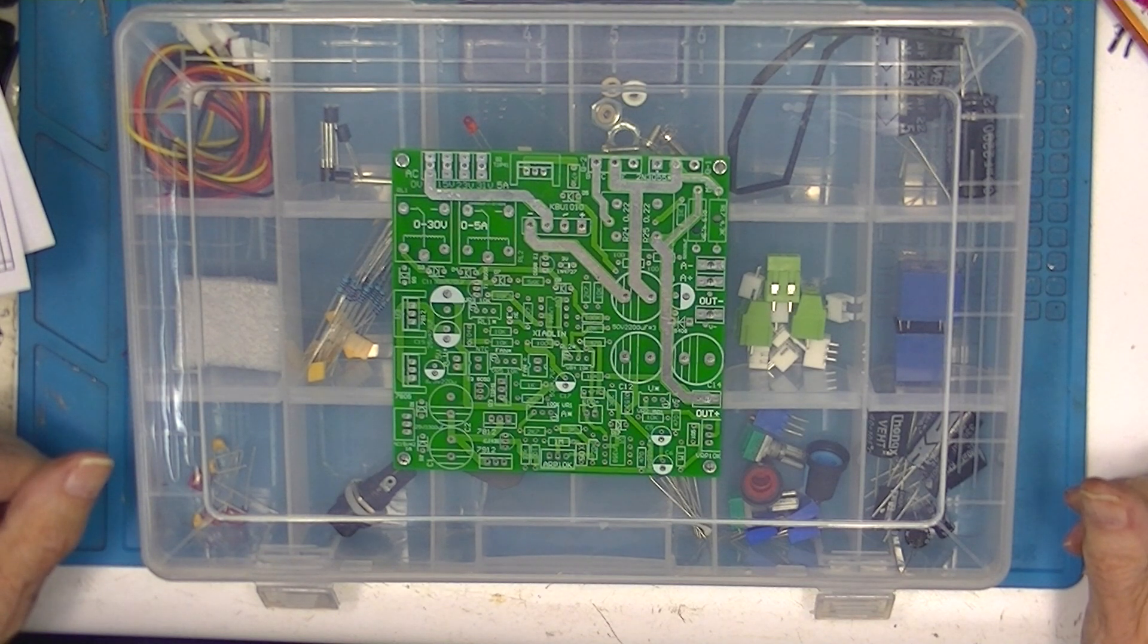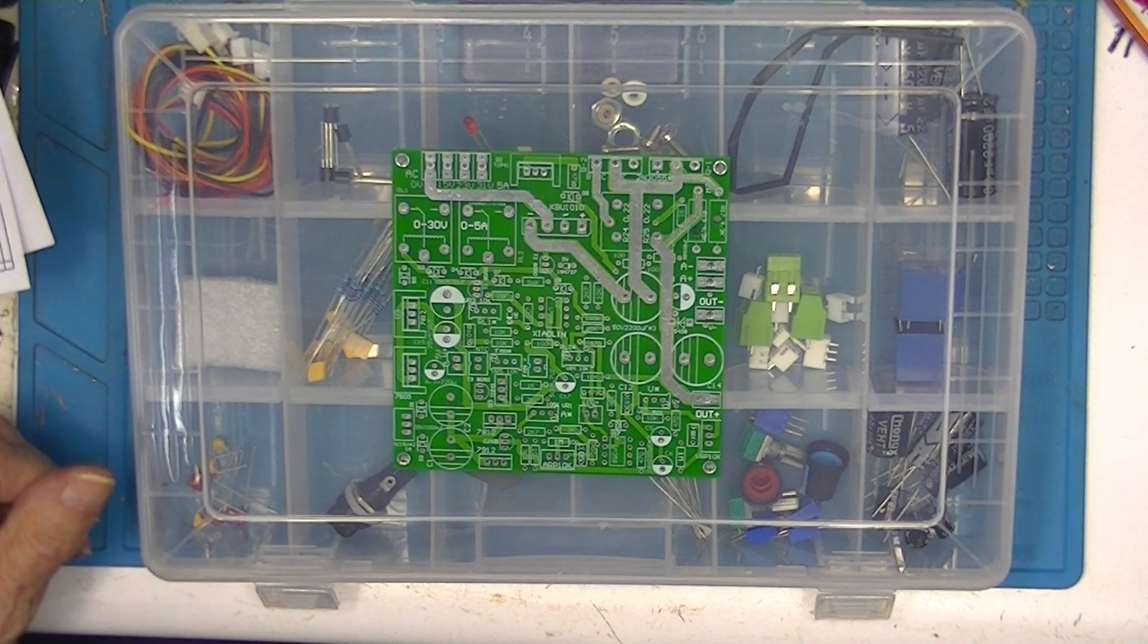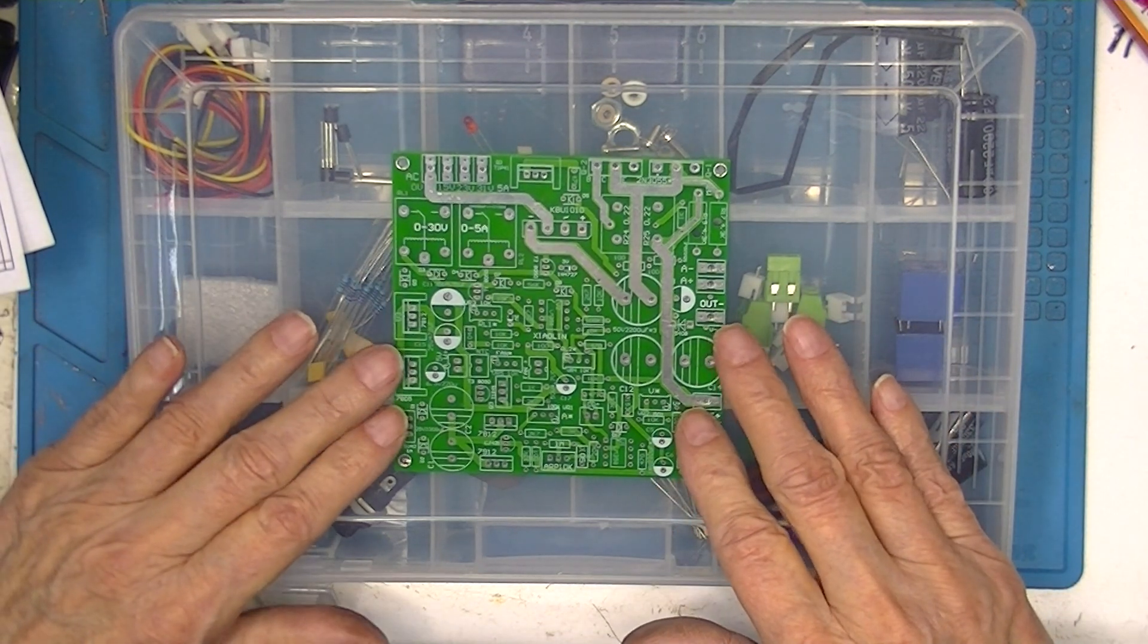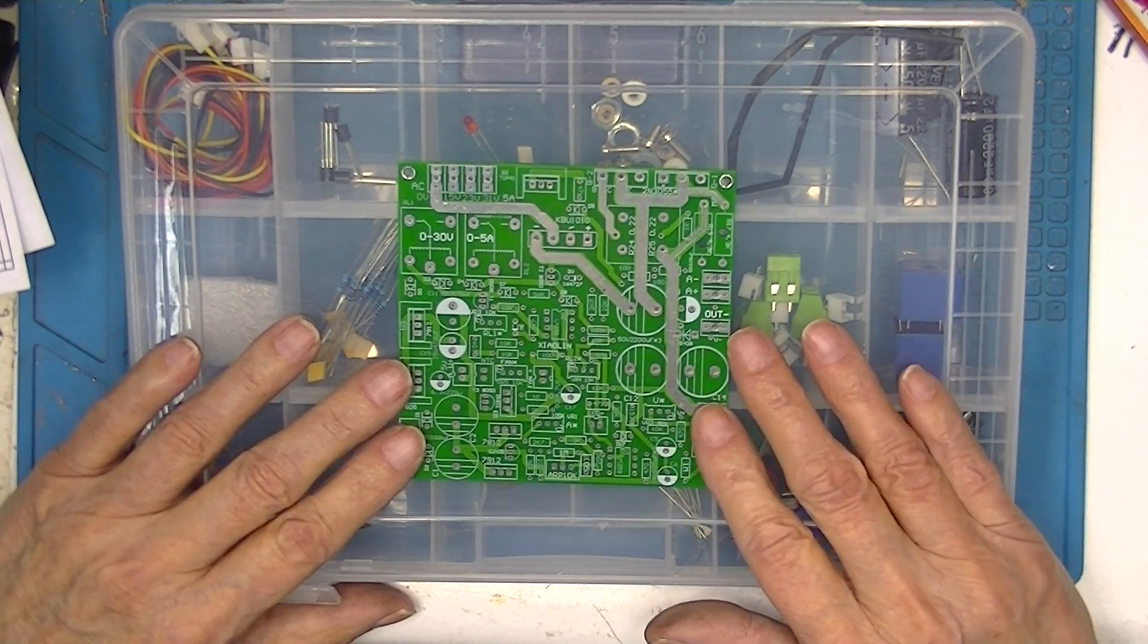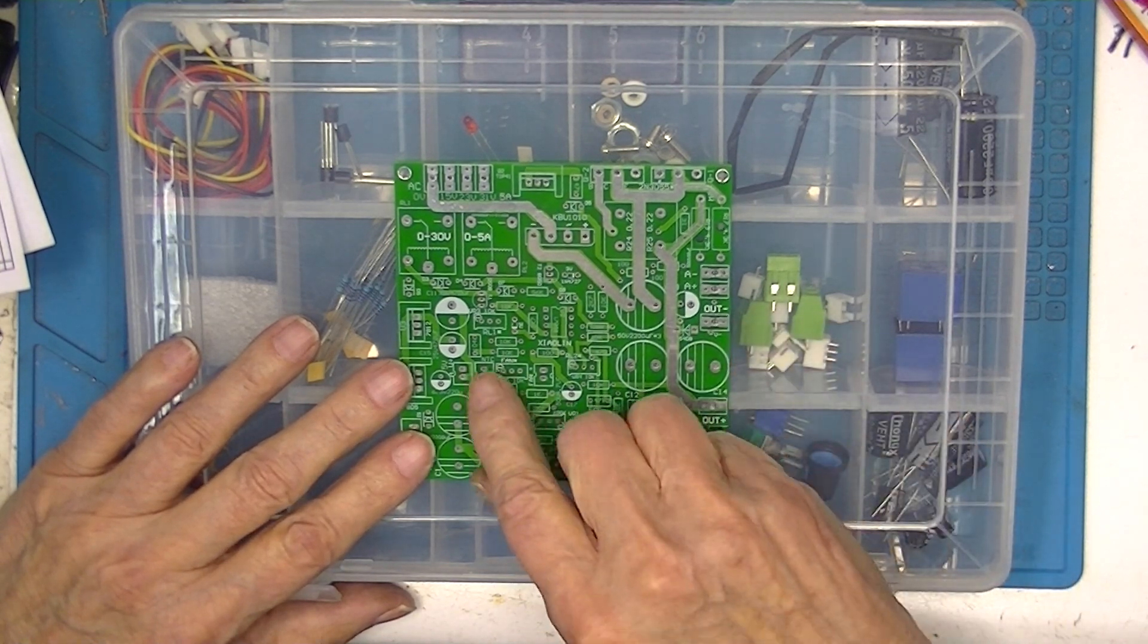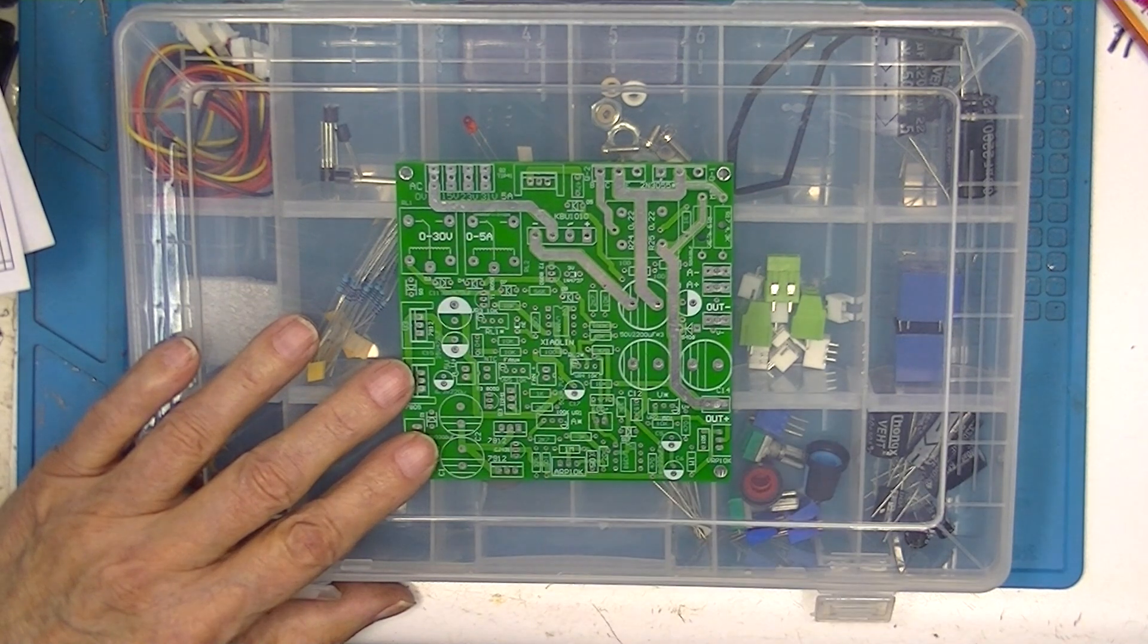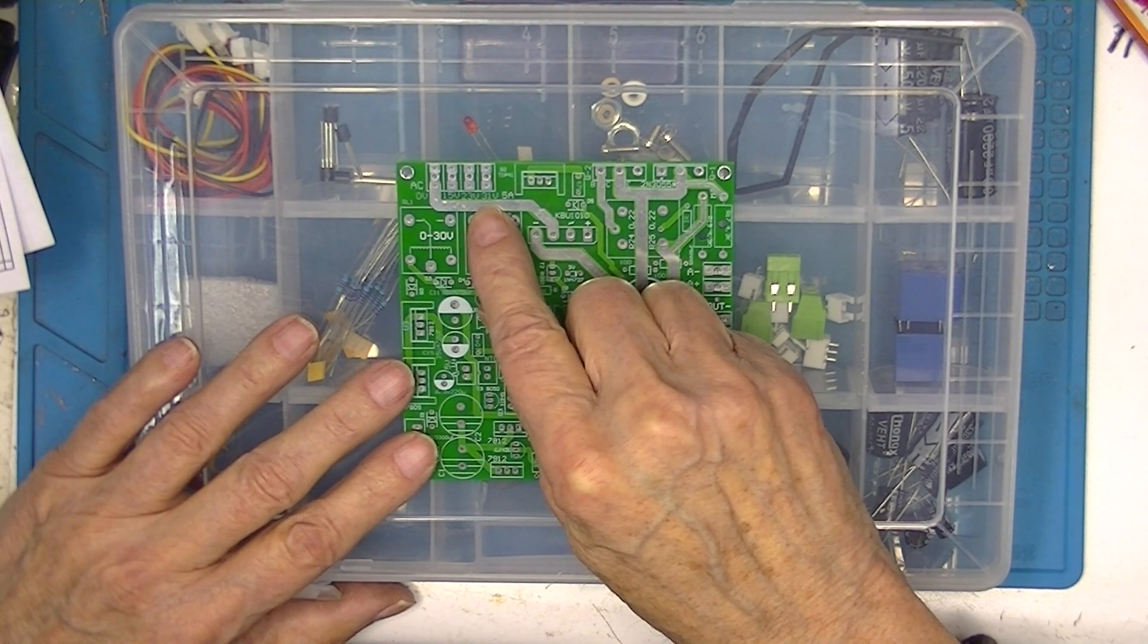I'm going to embark on another project. It consists of assembling another power supply. This was sold as a 35 volt 5 amp power supply. Silkscreen says 30 volts at 5 amps. Power input shows 31 volts AC.